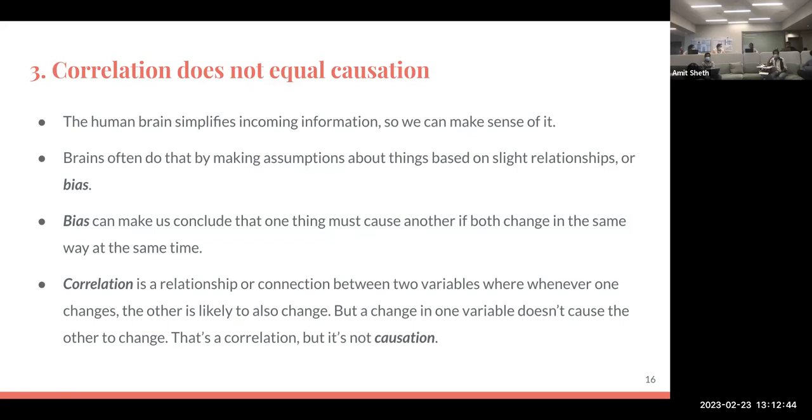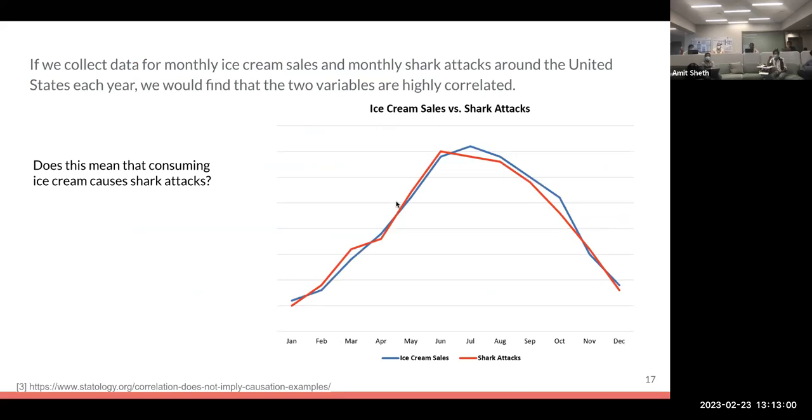This is known as correlation—that's the relationship or connection between two variables when one changes the other is likely to change. But a change in one variable does not always cause the other to change. This is relation but not causation. For example, if we collect data of monthly ice cream sales with shark attacks in the U.S., we would see this pattern. Does this mean that consuming ice cream causes shark attacks? Obviously not, because in warmer days we like to eat ice cream and also people go outside and go to the beaches, so high shark attacks can be seen.